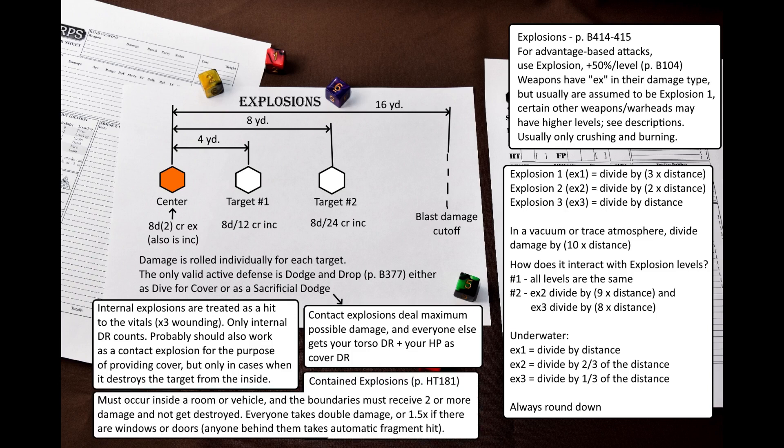Then there's another type of explosions, that was introduced in High-Tech. Contained explosions. If an explosion occurs in a room or inside a vehicle, and the boundaries would receive two or more points of damage without getting destroyed by the blast, then an explosion is considered to be contained. Anyone in the area takes double damage, or half as much, if there are doors and windows. Anyone behind a rupturing door or window automatically takes fragmentation damage.